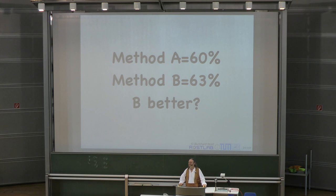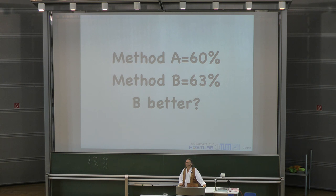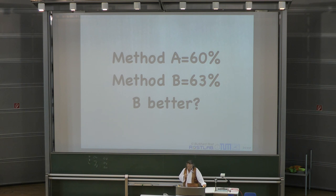Let me be mean to you. How would you suggest to define which is better? It depends what you want to get. If you want overall accuracy, then B is better. Or do you want, for example, better accuracy for a specific secondary structure state than A?